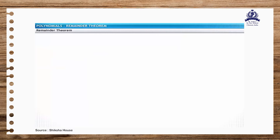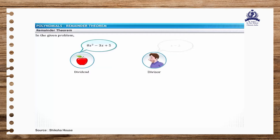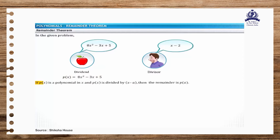Let's now apply the theorem to solve our problem. The dividend is equal to 8x squared minus 3x plus 5 and the divisor is equal to x minus 2. Let p of x equal 8x squared minus 3x plus 5. According to the remainder theorem, if p of x is divided by x minus a, then the remainder is p of a. Therefore, in this problem, the remainder r is p of 2.